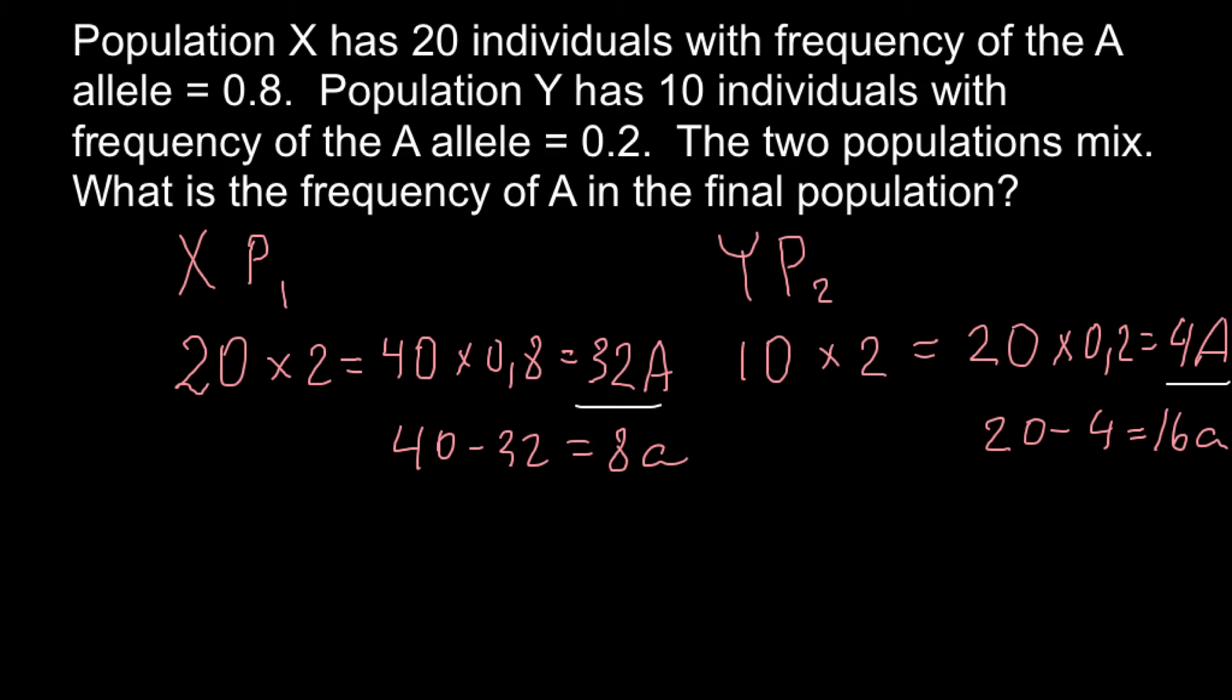So now these two communities join and make a third community. This is going to be a third community. And total number in this third community would be 40 plus 20. So total number would be 60 alleles.